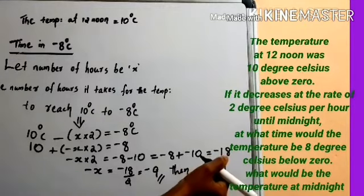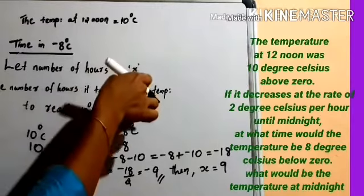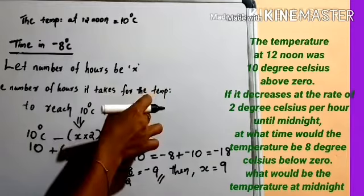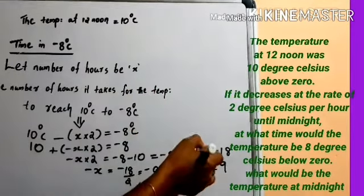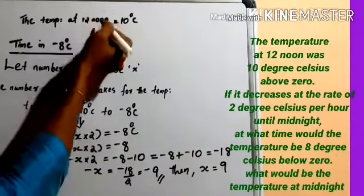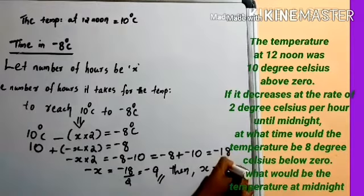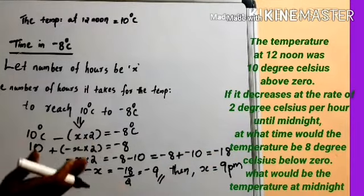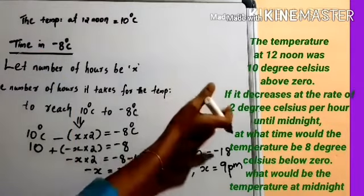This 9 represents the total number of hours to reach negative 8 degree Celsius, and also the time at which temperature is negative 8 degree Celsius. After 12 noon — 1 PM, 2 PM, and so on — up to 9 PM. So the correct time is 9 PM. With the help of a number line, this question's answer can also be found easily.